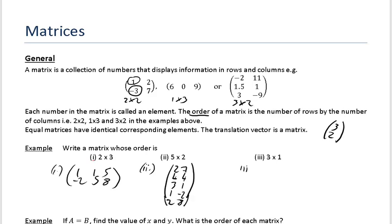Last one. It says three rows and one column. So it's a tall matrix again. So I've just done 3, 7, and 9. That's it.